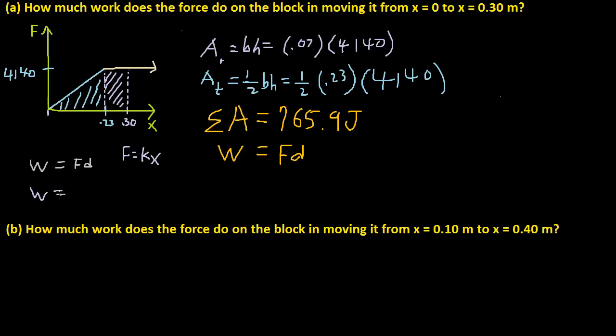So work is equal to kx times d. What is d? Well, d is x, so x again. So basically work is equal to kx squared.